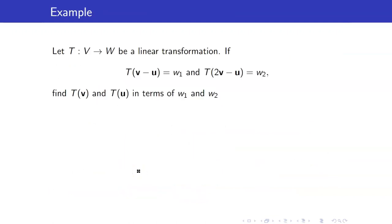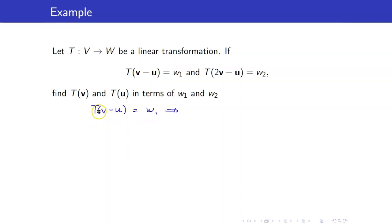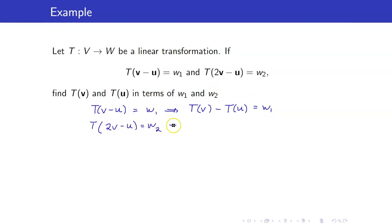Here is an application of the properties we just discussed. Suppose that T of V minus U is equal to W1 and T of 2V minus U is equal to W2. We want to find T of V and T of U in terms of W1 and W2. From the first equation, we write T of V minus U as T of V minus T of U, which equals W1. The second equation, T of 2V minus U, can be written as 2 times T of V minus T of U, which equals W2.